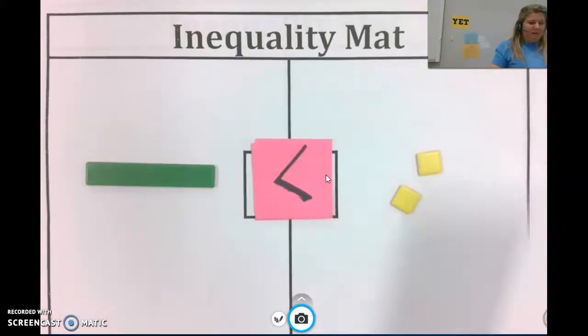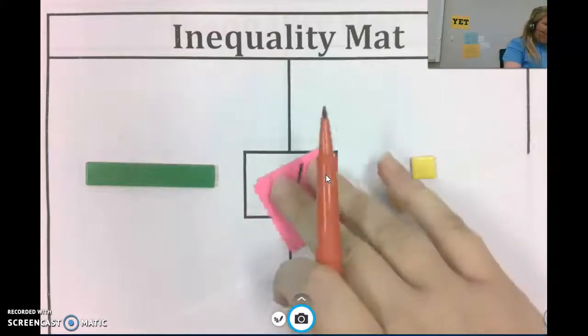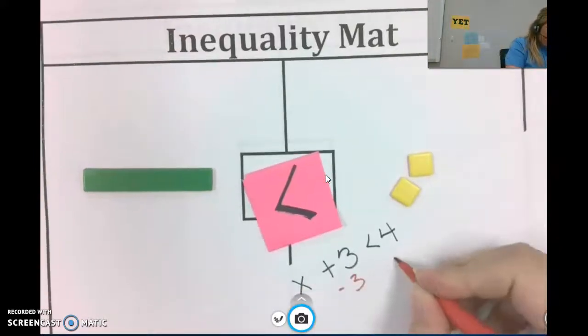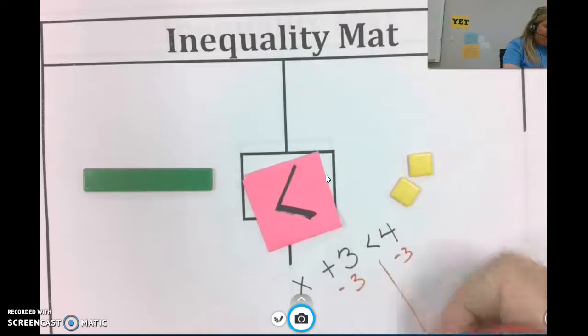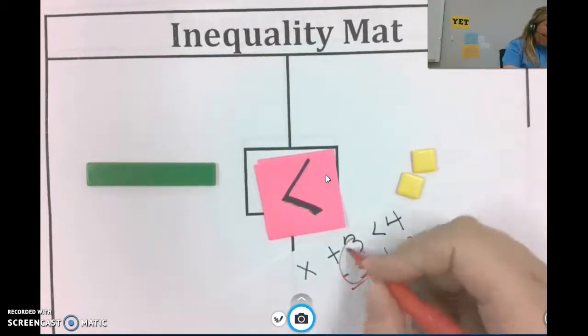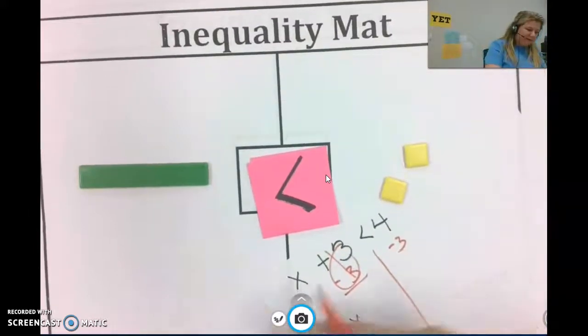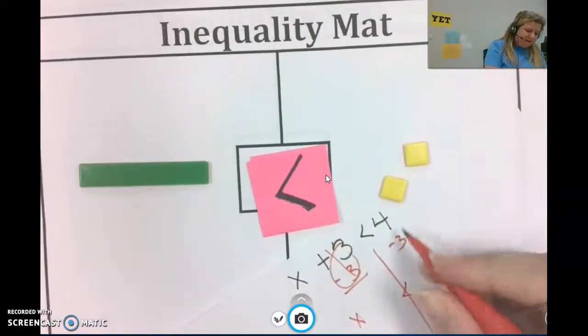So the first thing I would do is remove 3 from each side because I'm trying to isolate the variable which is x. So x is less than 2. And then on my paper to show that, I'm going to use a different color. And I will show that I am subtracting 3 from each side or from each expression.